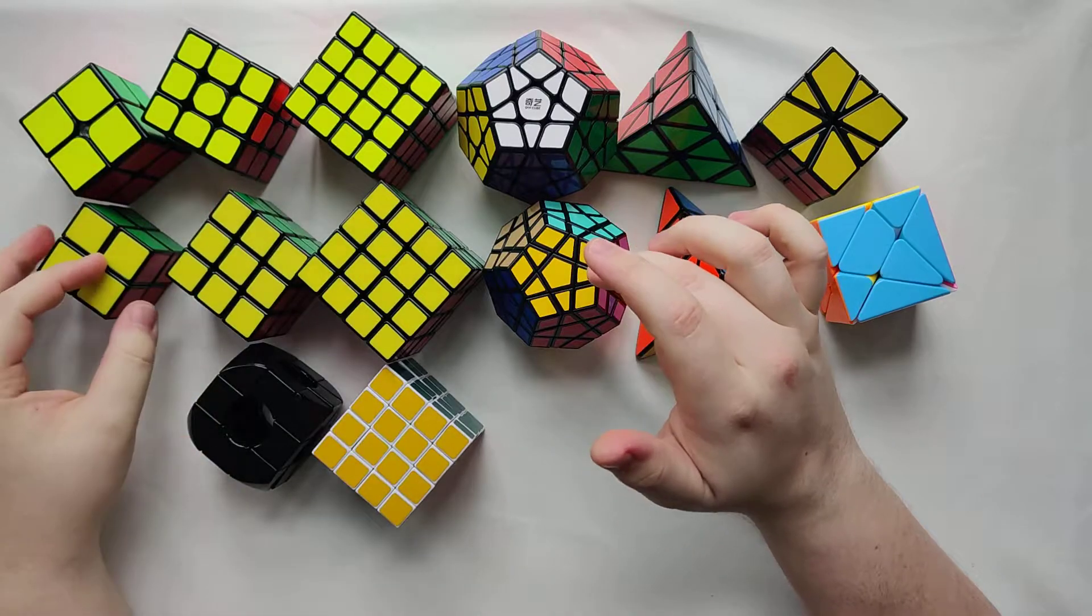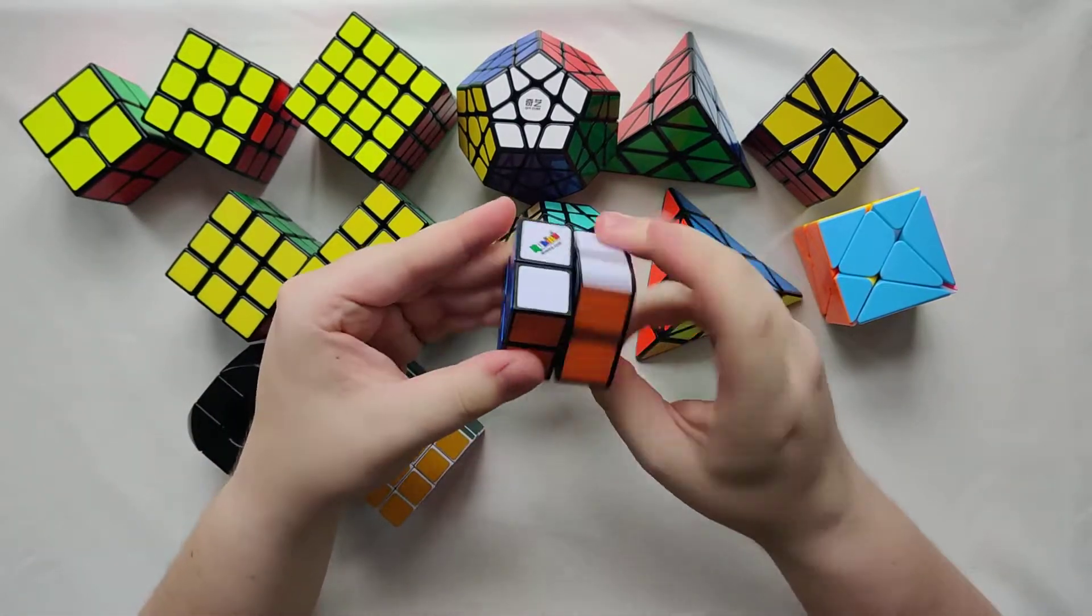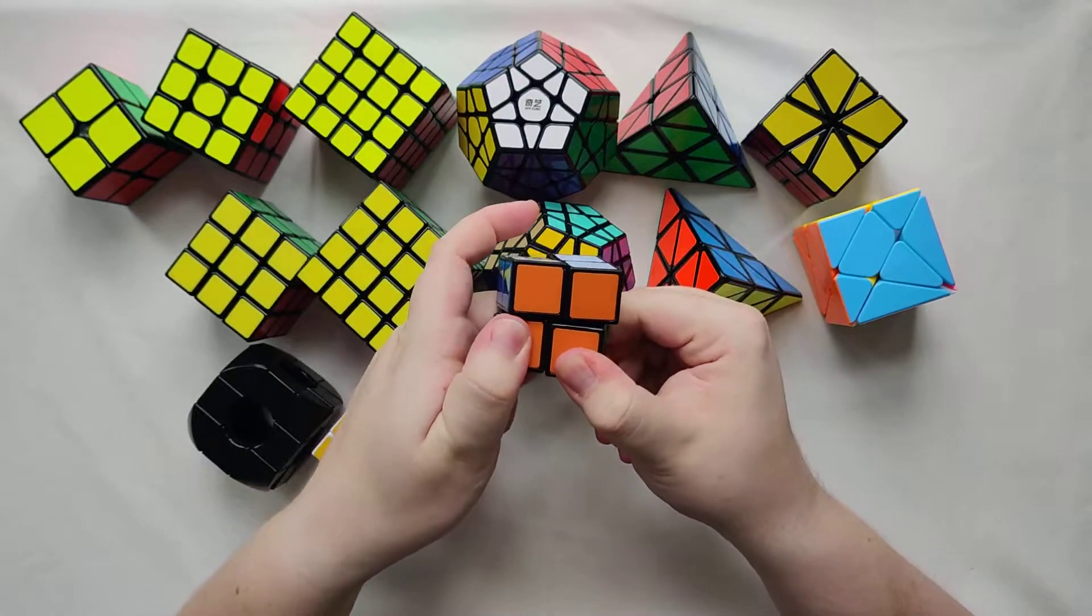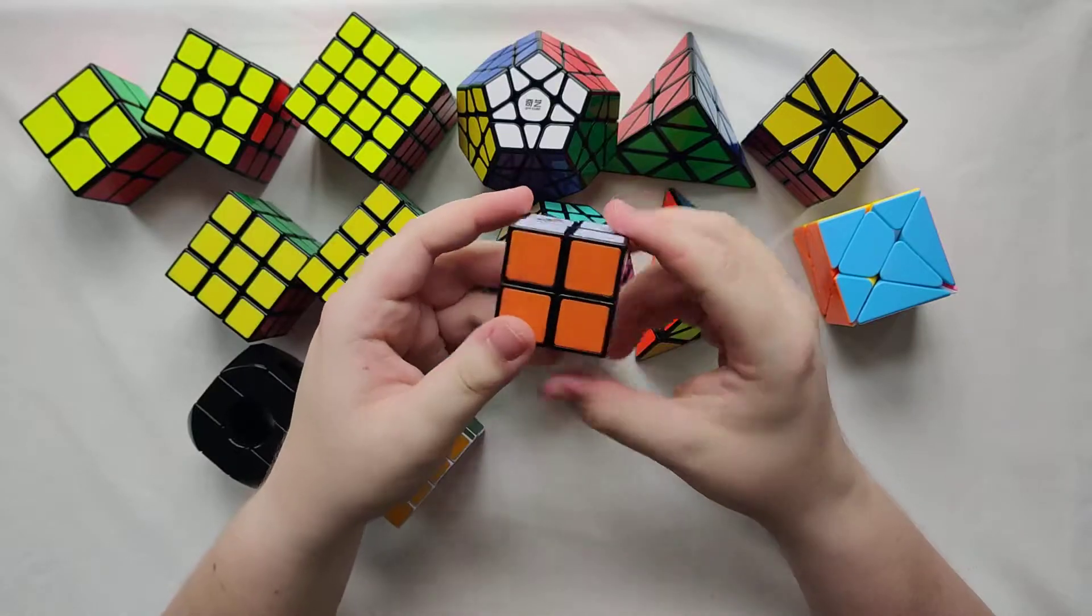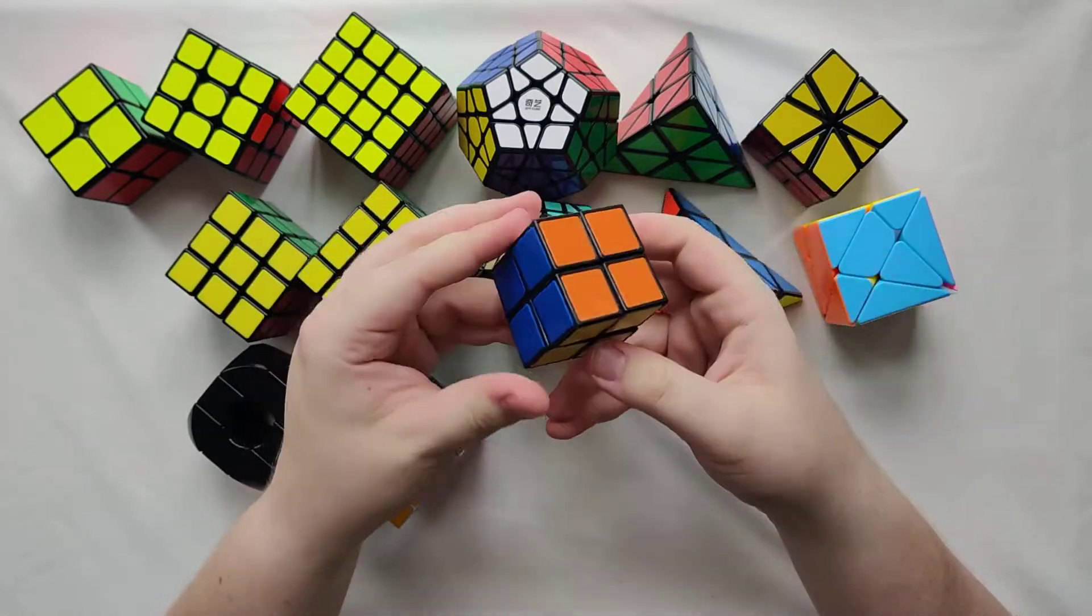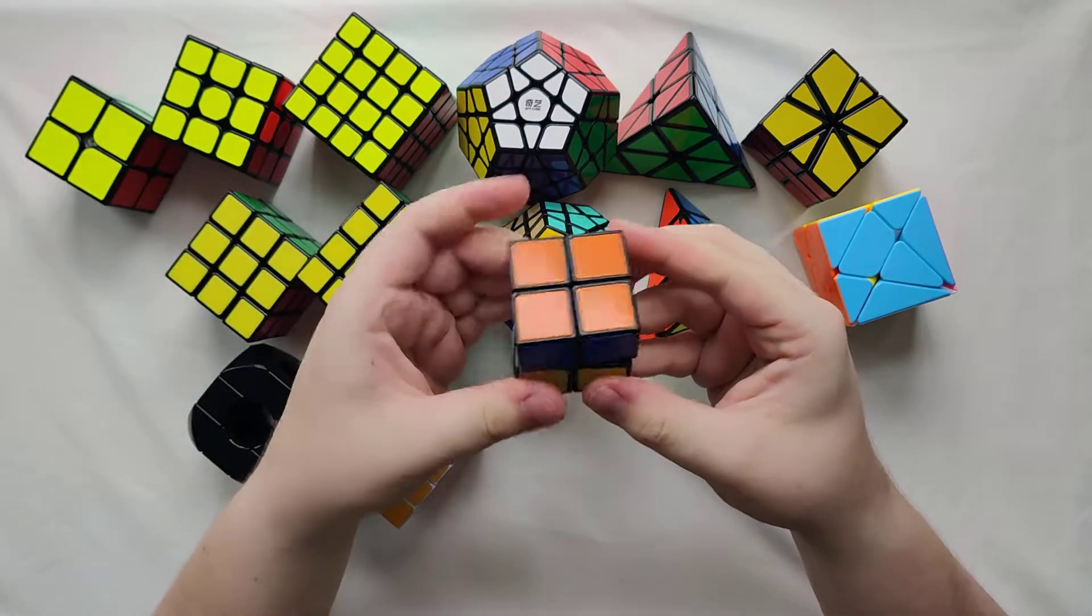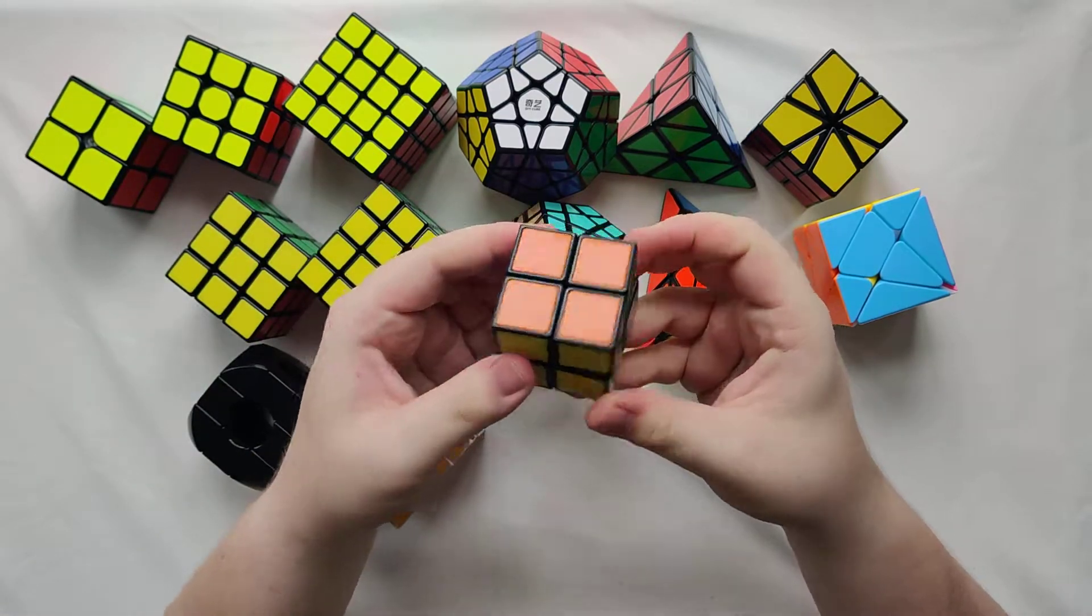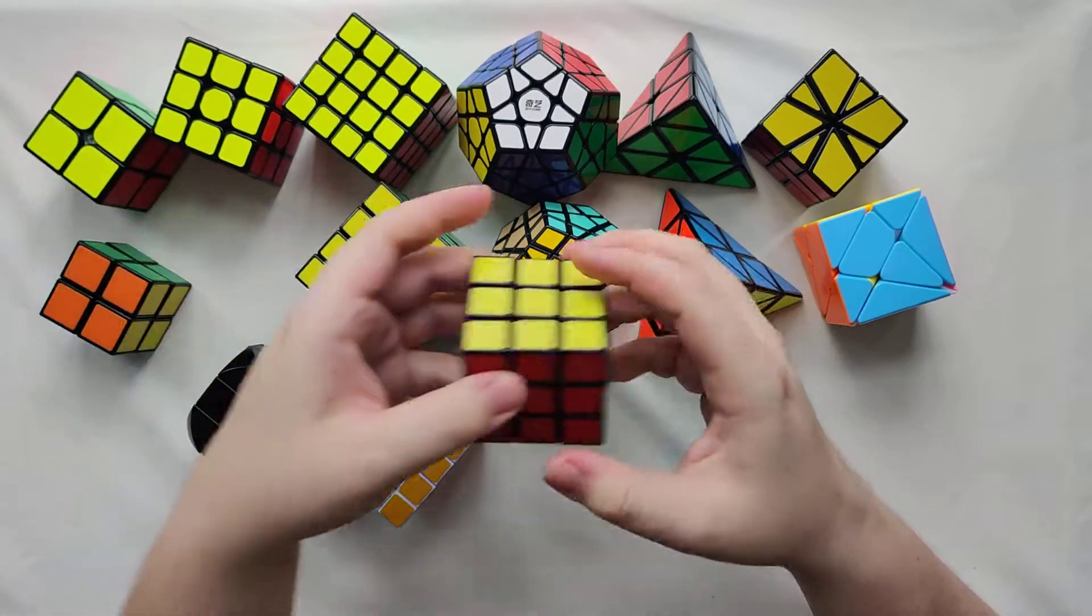Then we move on to my Rubik's puzzles. So we have a Rubik's brand 2x2. This is just horrible. Cannot corner cut at all. It's just cheap. Well, no it's not cheap. It's definitely heavier than my speed one. And it just feels clunky and tiny as well. Because it's so much smaller. Don't have a Rubik's brand 3x3.